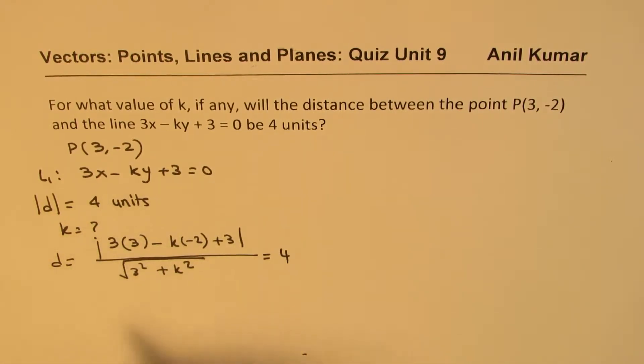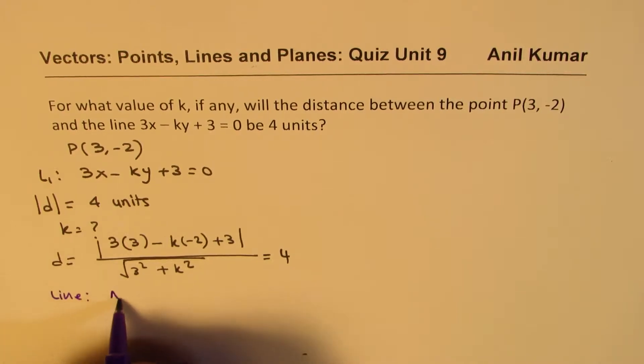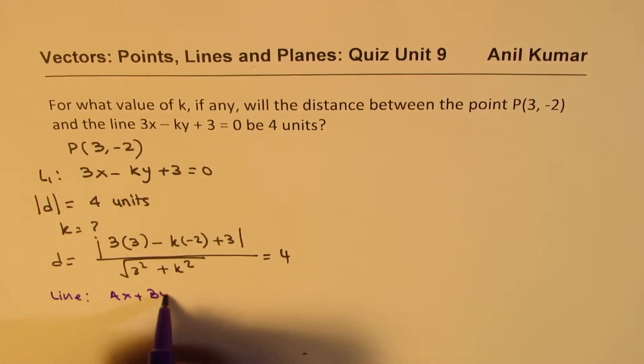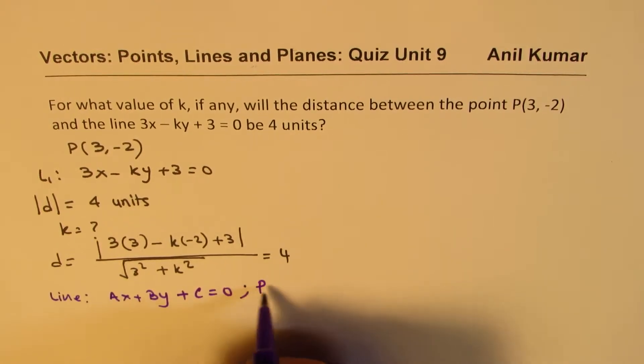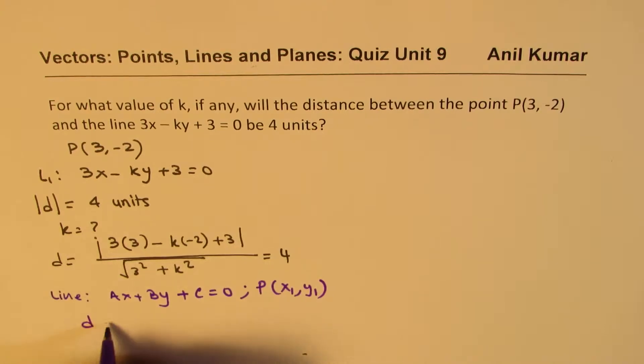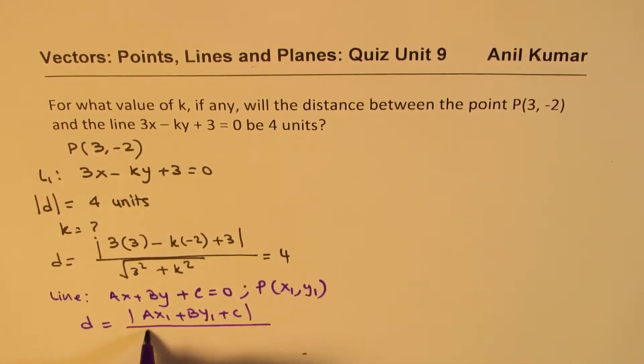So what I have written here is basically that if the line is ax + by + c = 0, and the point P is (x₁, y₁), then the distance d is absolute value of ax₁ + by₁ + c divided by square root of a² + b². So we have used this formula.